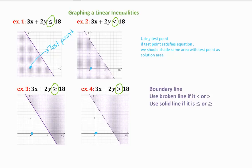So what are we doing with the test point? If the test point satisfies the equation, we will shade the same area with the test point as the solution area. In the first example, we shade the same area with the test point because (0,0) satisfies. In the second example, it also satisfies.